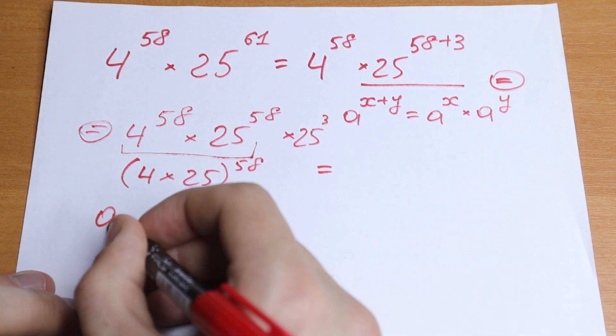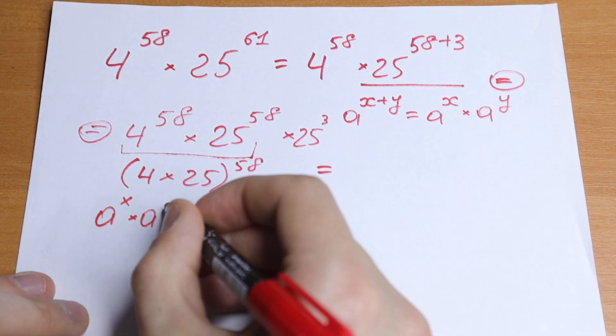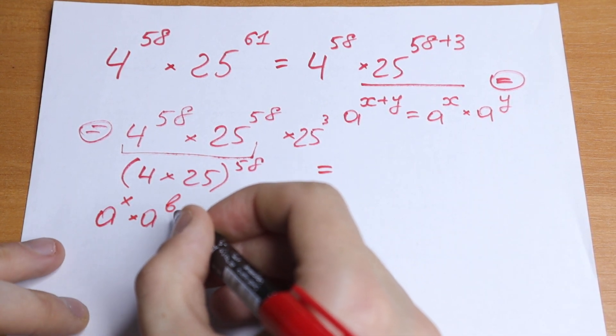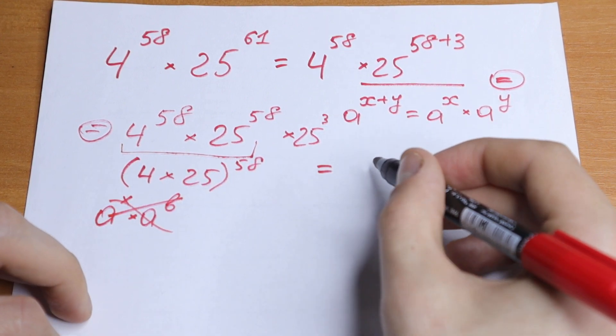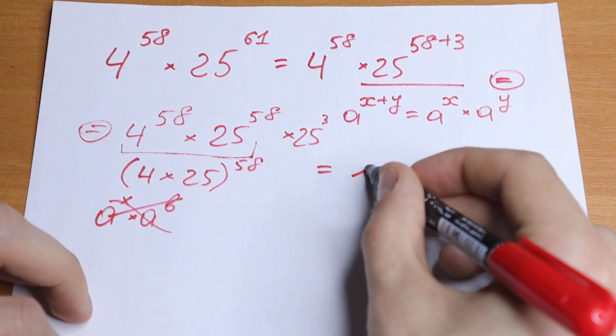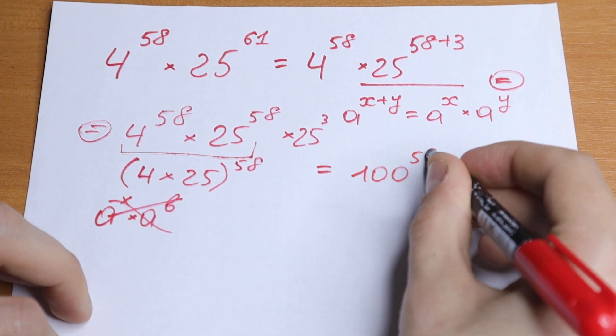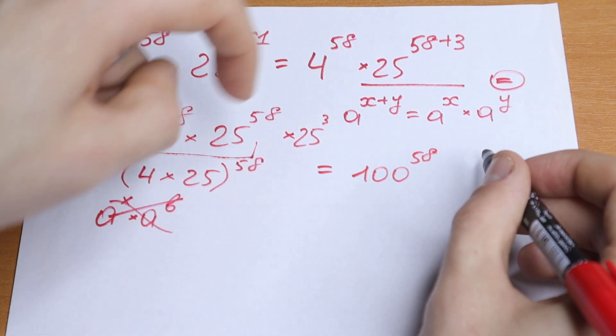We can write it as 100 to the power 58 and times 25 cubed.